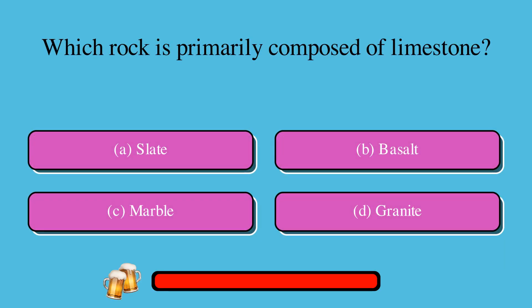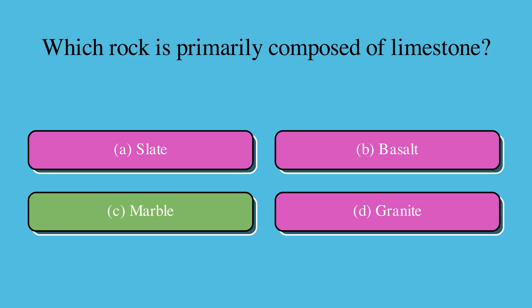Which rock is primarily composed of limestone? A. Slate, or B. Basalt, or C. Marble, or D. Granite? The correct answer is C. Marble.